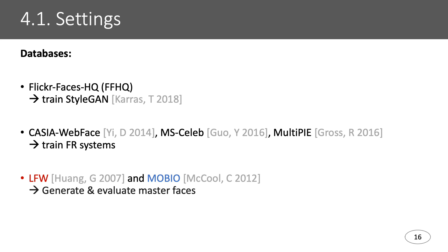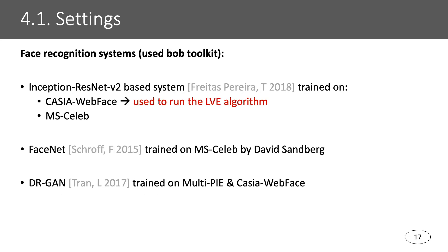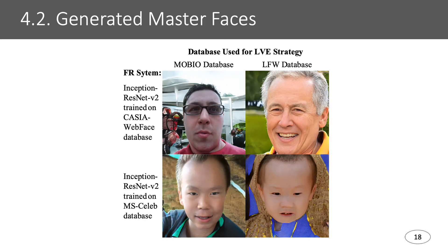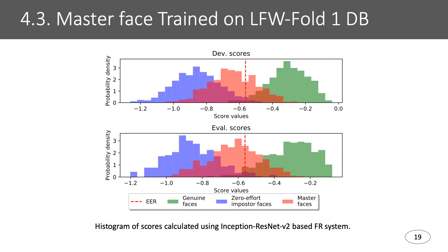Next I will discuss the evaluation. For StyleGAN, face recognition systems, and the latent variable evolution process, we use different databases. We use three face recognition systems for evaluation: Inception-ResNet V2, FaceNet, and DR-GAN. These are four master faces generated using different face recognition systems and different face databases. As you can see, a master face can be an old man, a child, smiling or not smiling, wearing glasses or not. You can also see the shape of the distribution between the zero-effort impostor faces and the master faces, and there is some overlapping region between them.